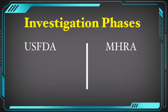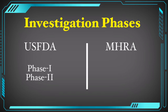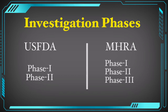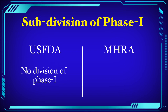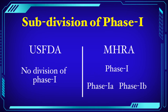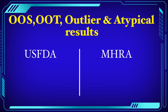The USFDA guideline divides OOS investigation into two phases: Phase 1 and Phase 2. However, the MHRA guideline divides OOS investigation into three phases: Phase 1, Phase 2, and Phase 3. In the USFDA OOS guideline there is no further subdivision of the Phase 1 investigation. However, in the MHRA OOS guideline, Phase 1 has been further divided into Phase 1A and Phase 1B.